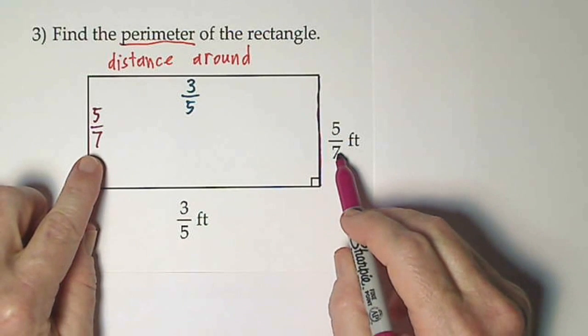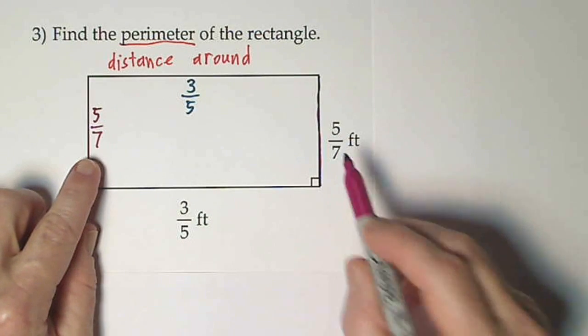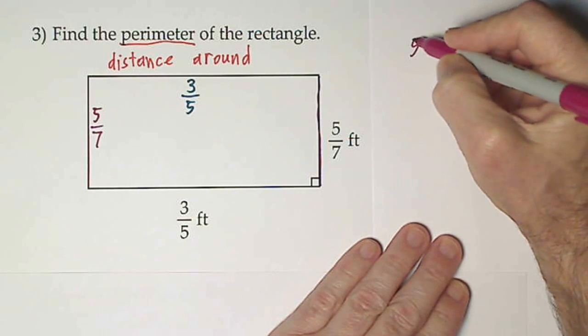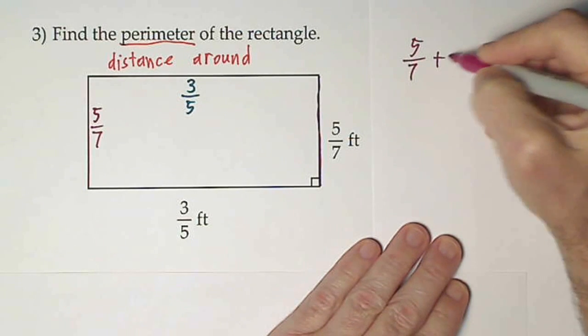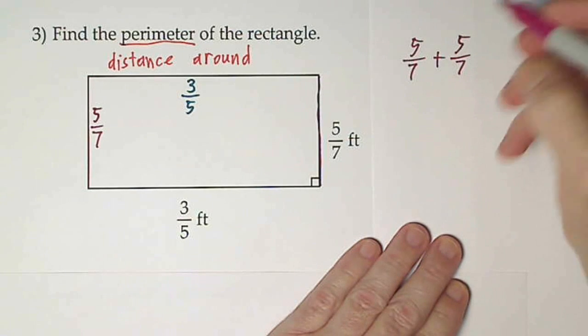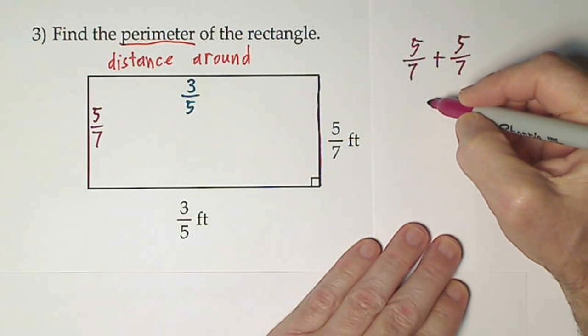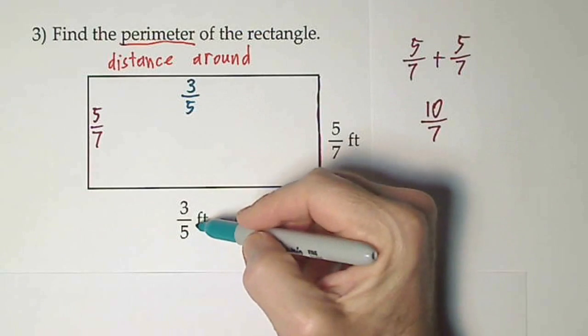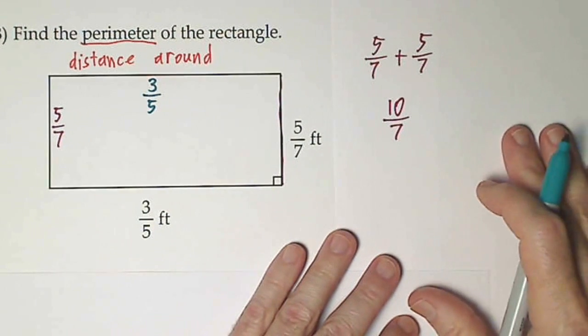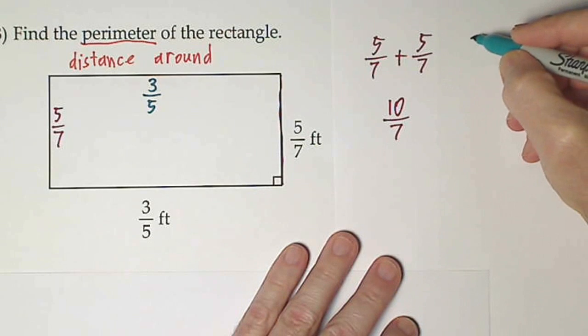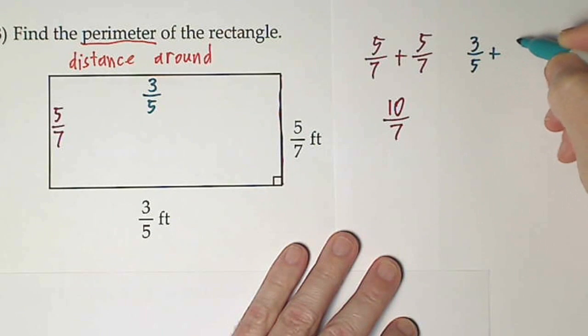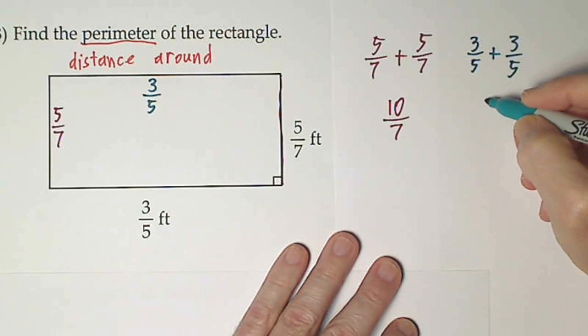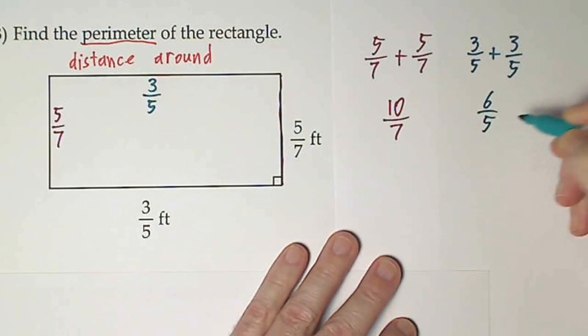To start out, let's take care of these two since they already have common denominators. So that would be 5/7 plus 5/7. That gives us a total of 10/7. And then for 3/5 and 3/5, that gives us a length of 6/5.